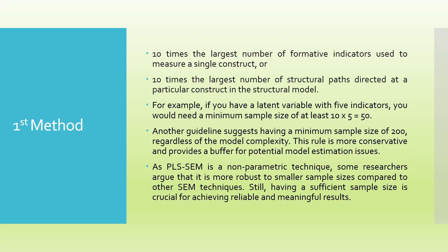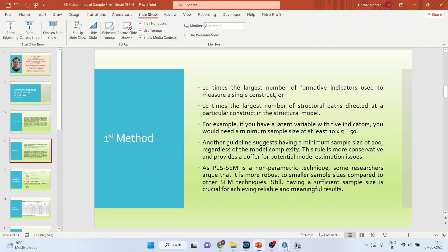First method: 10 times the largest number of formative indicators used to measure a single construct, or 10 times the largest number of structural paths directed at a particular construct in the structural model. So we will go in Smart PLS.